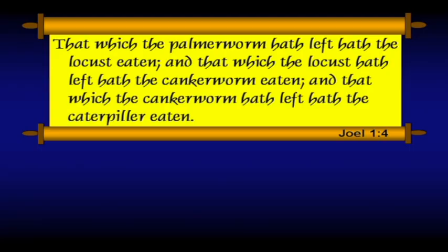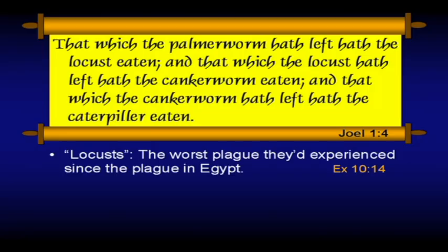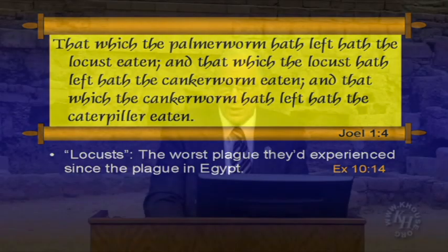Moving on with Joel here, verse 4: 'That which the palmer worm hath left, hath the locust eaten. And that which the locust hath left, hath the canker worm eaten. And that which the canker worm hath left, hath the caterpillar eaten.' The translation is dealing with four different kinds of creatures here. This is the worst plague they'd experienced since the plague in Egypt in Exodus 10.